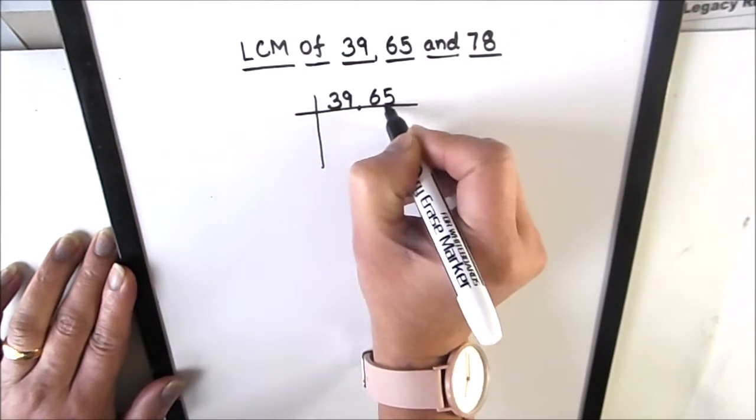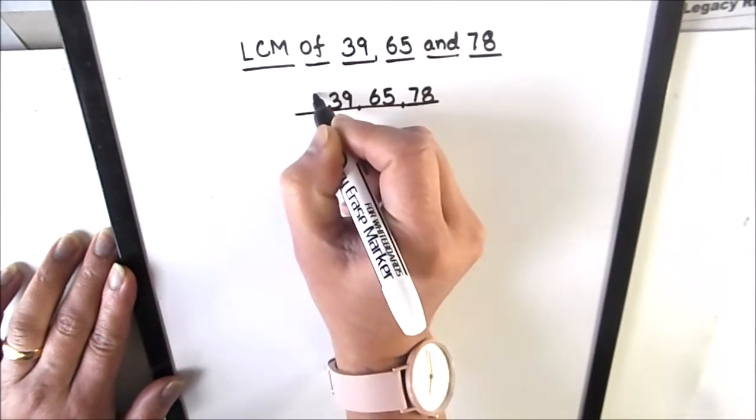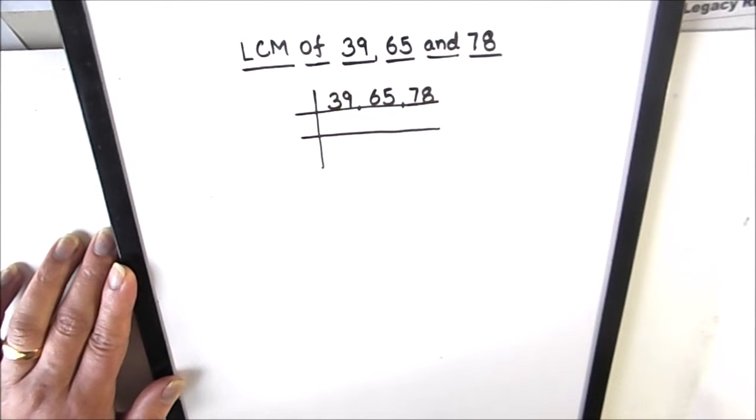We will be using the prime factorization method in which we divide all numbers by prime numbers. Find the factors of the number. After finding the factors, we are going to take the product of the factors to find the LCM or least common multiple of the three numbers.